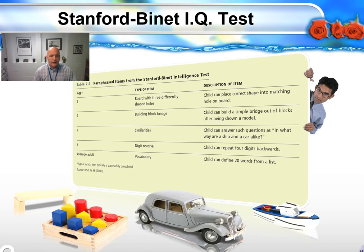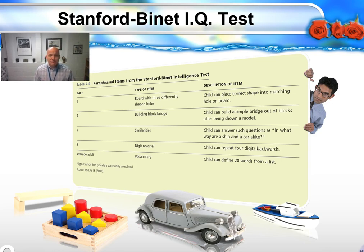The Stanford-Binet has a four-year-old mental age item involving a block bridge. The person administering the test can simply show children the block bridge, and a four-year-old ought to be able to replicate it. A seven-year-old should be able to understand similarities — for instance, in what ways are a ship and a car alike? Children below age seven can't really grasp this abstraction; a four-year-old would say a car is not like a ship — ships go on water, cars go on the road. They think very concretely. But when children reach a mental age of seven, they should be able to say a car and a ship are both vehicles, can both have motors, and both carry people.